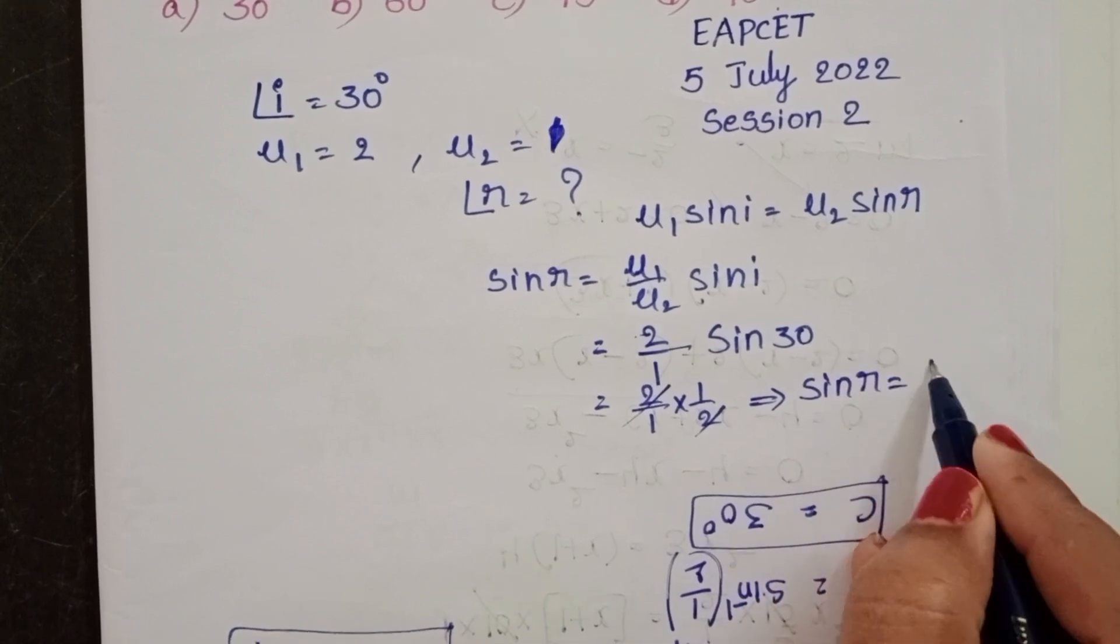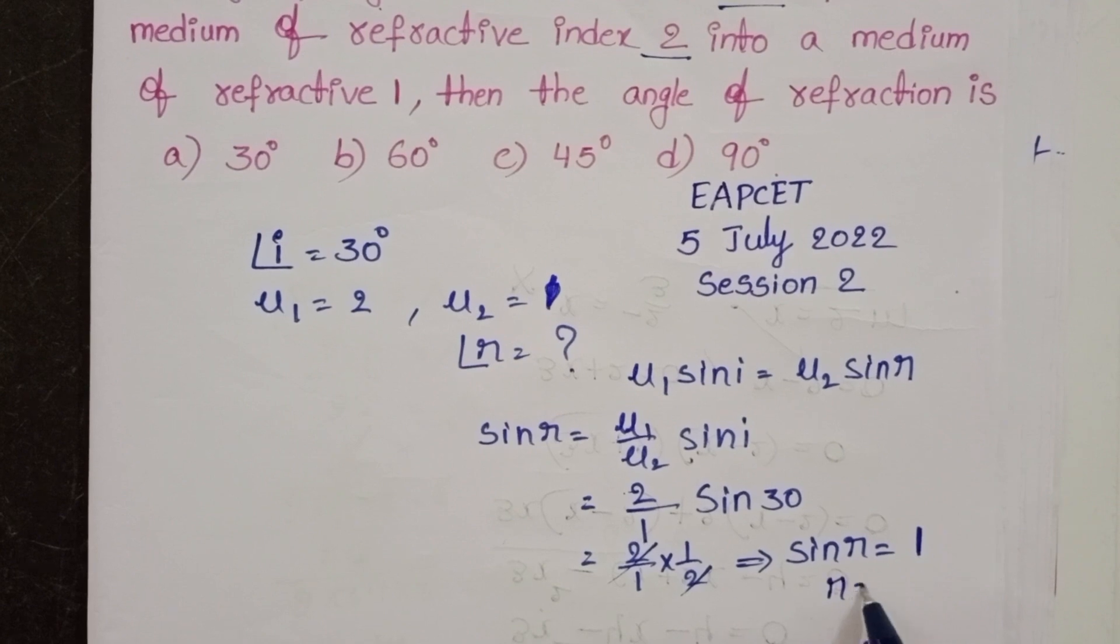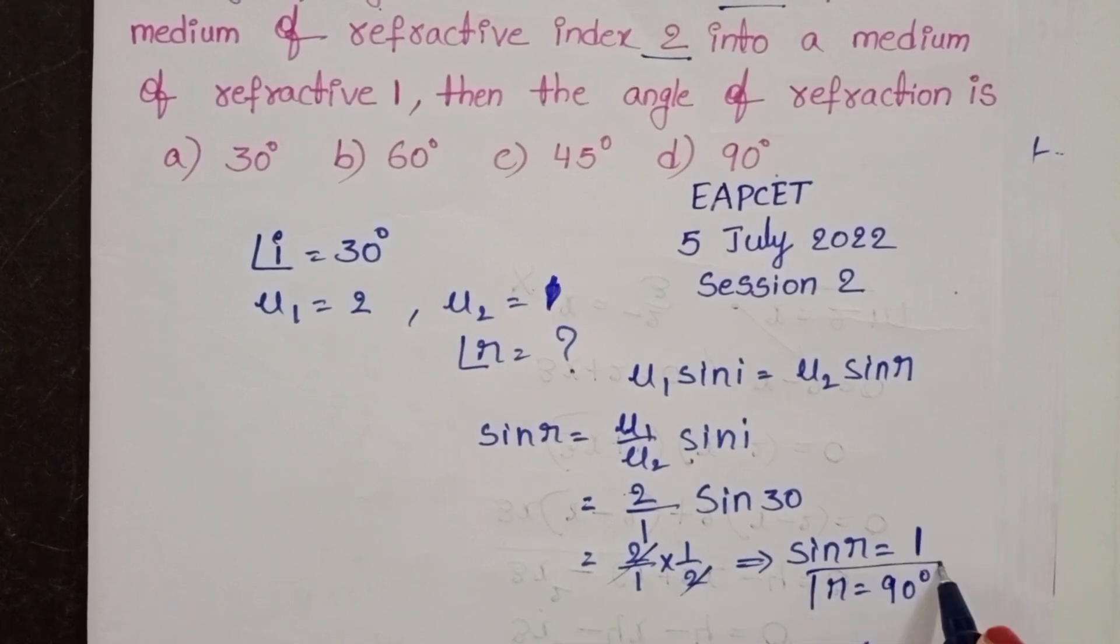Sin r equals 1. We know sin 90 degrees equals 1, so r equals 90 degrees.